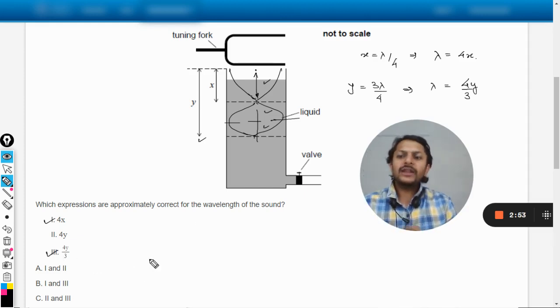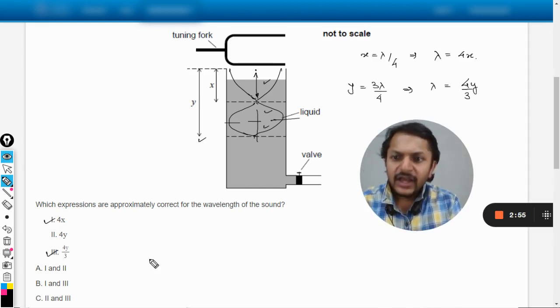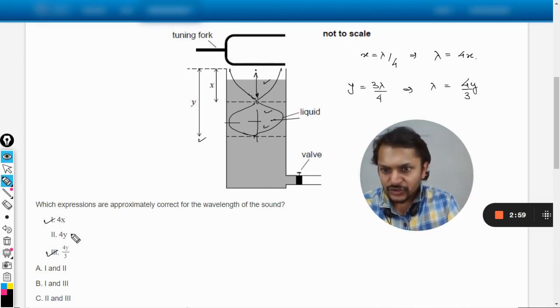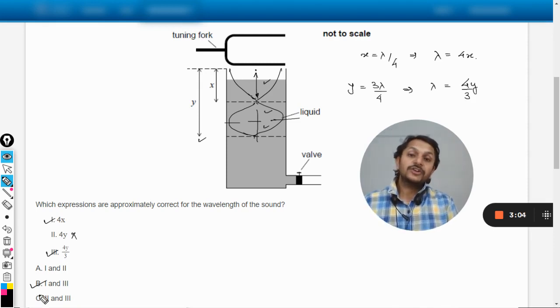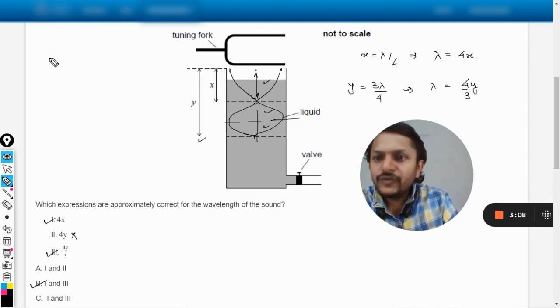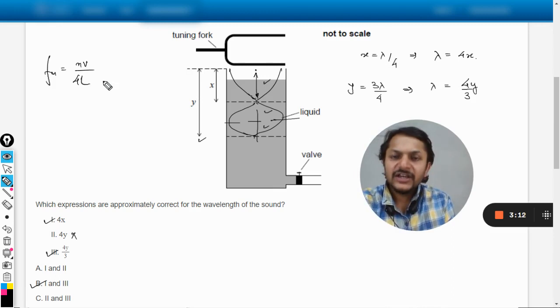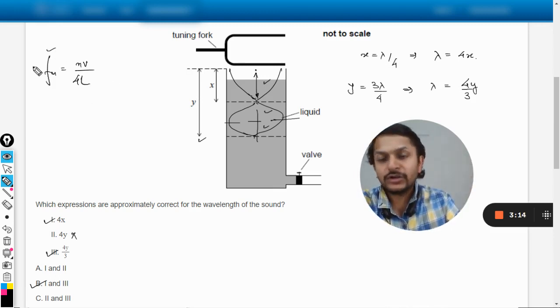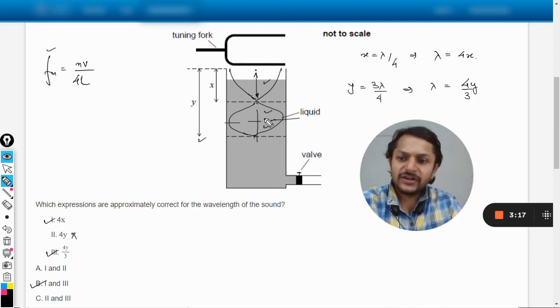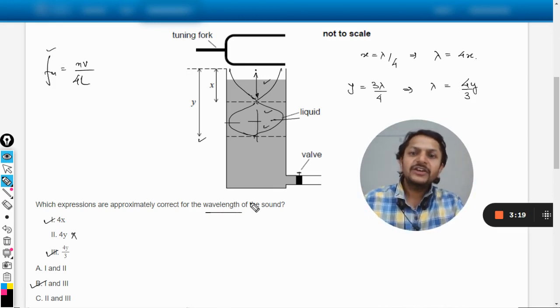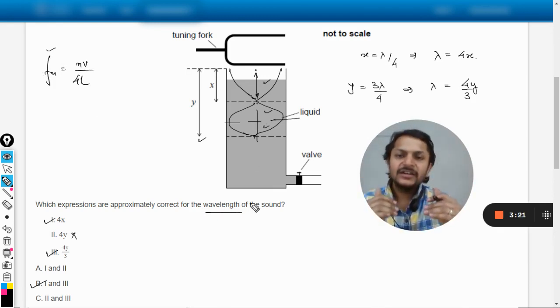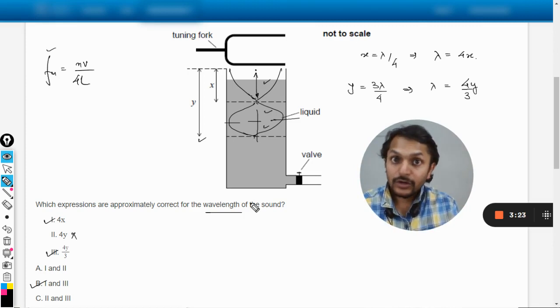Is it given here? Yes, 1 and 3 are absolutely correct. Lambda equals 4y is not the right relation, so this will be wrong. 1 and 3 is right, so B will be the correct answer. My dear students, this is how we do it. We are not talking about the frequency, so we need not bring in this formula. If they were talking about the frequency, we could have brought this thing, but here they're only concerned with the wavelength, so I'm just comparing the length with lambda by 4.